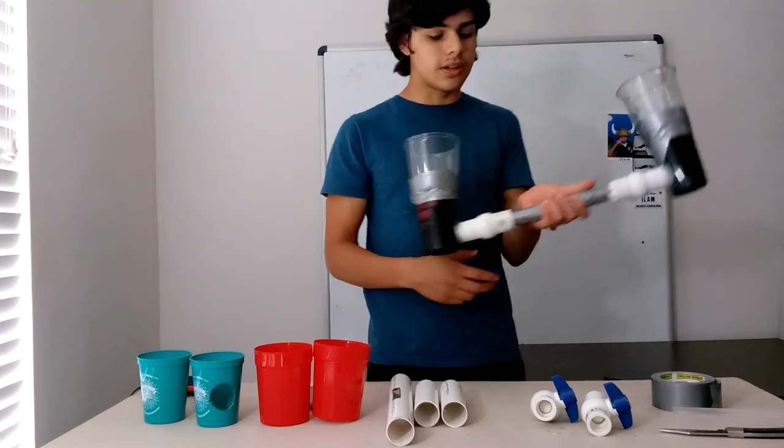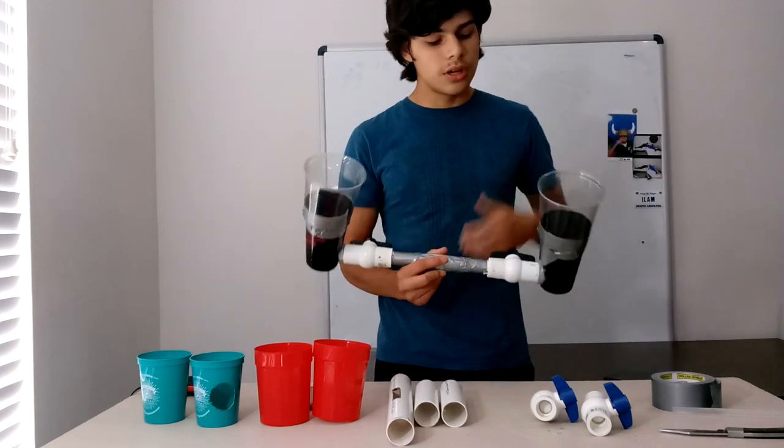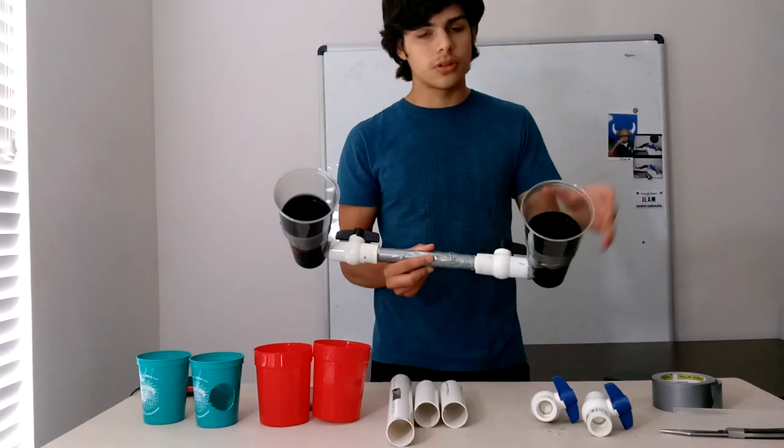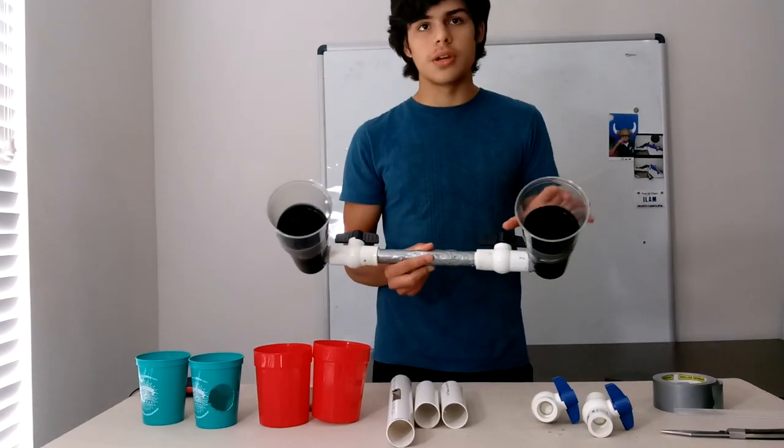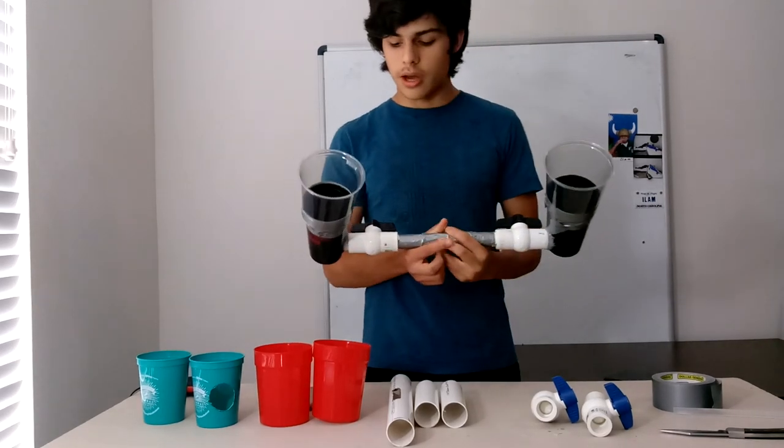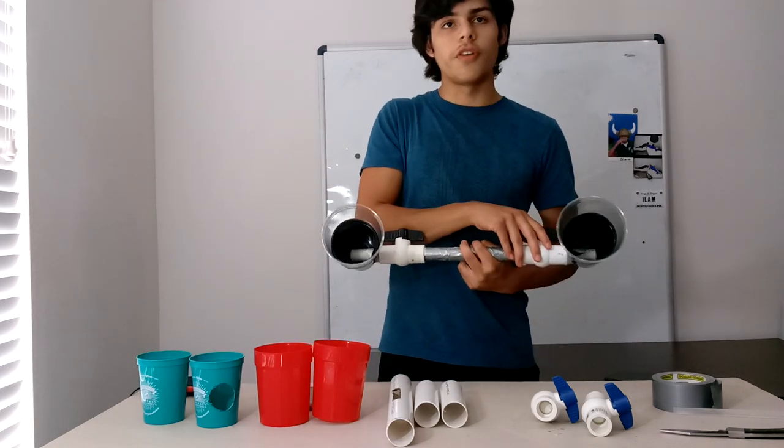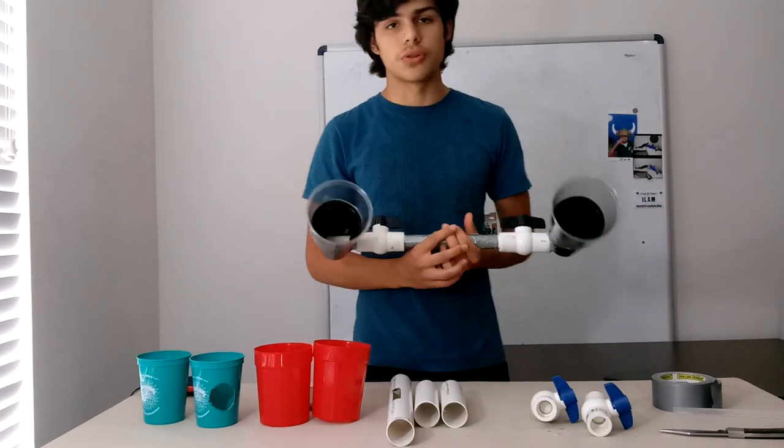So at the end it's going to look a little bit like this. You're going to have two outputs for your sound which are going to be cups and bowls, and you're going to have these two ball valves which are going to be your volume controllers.